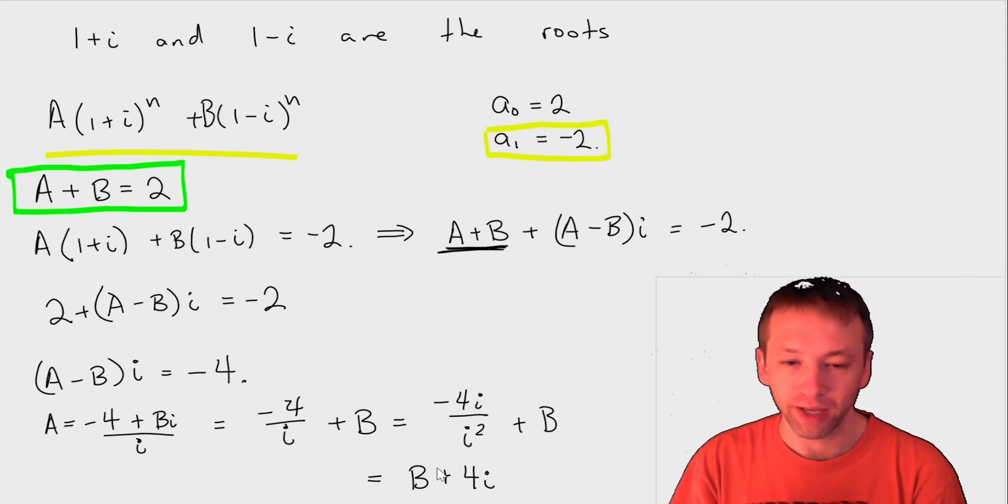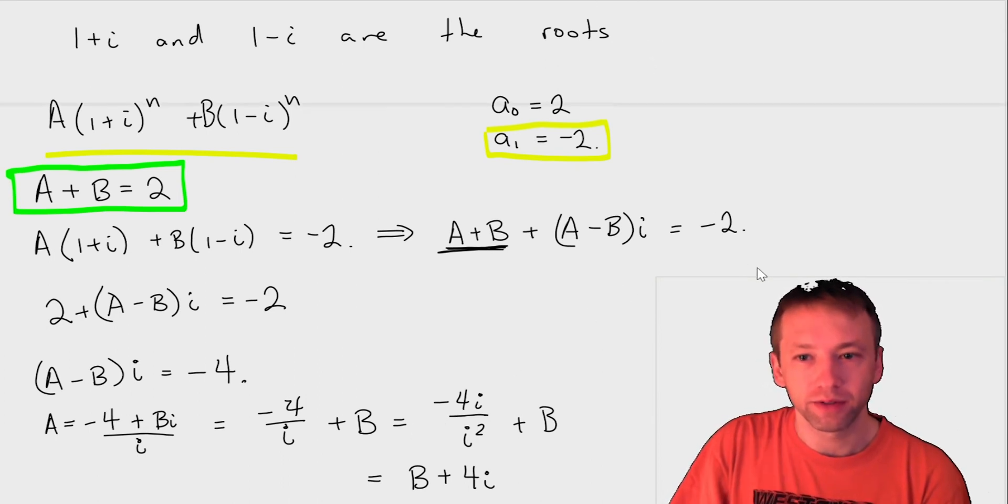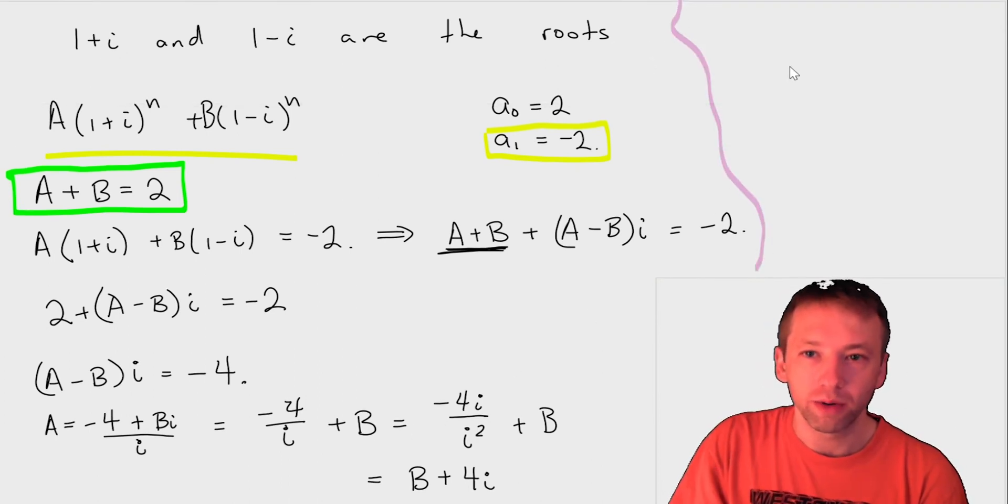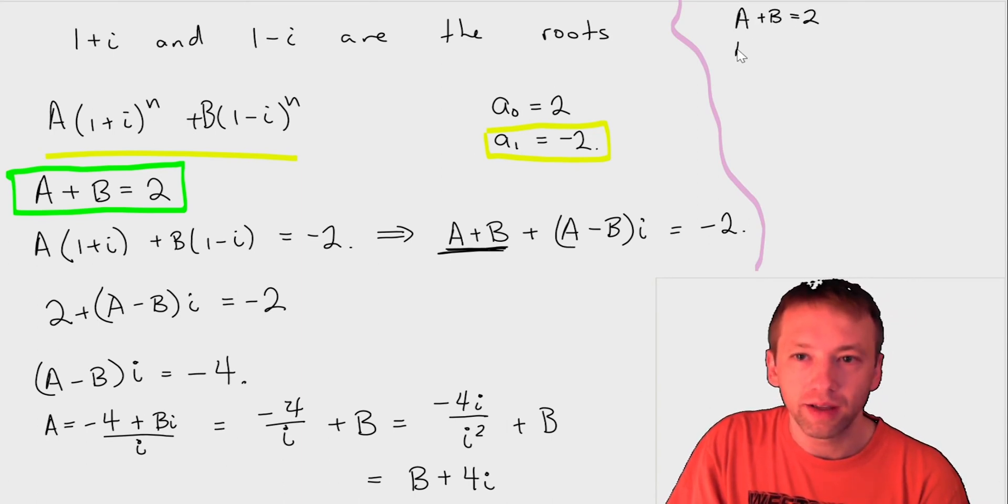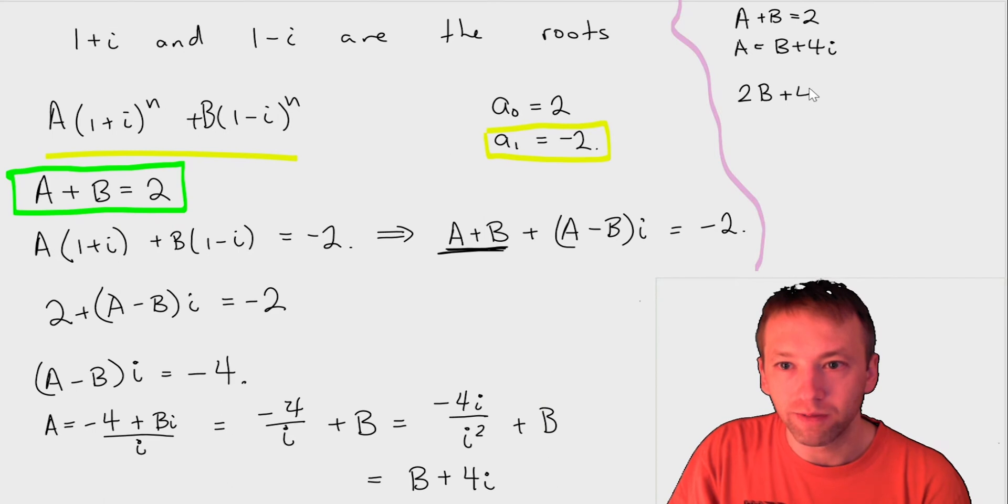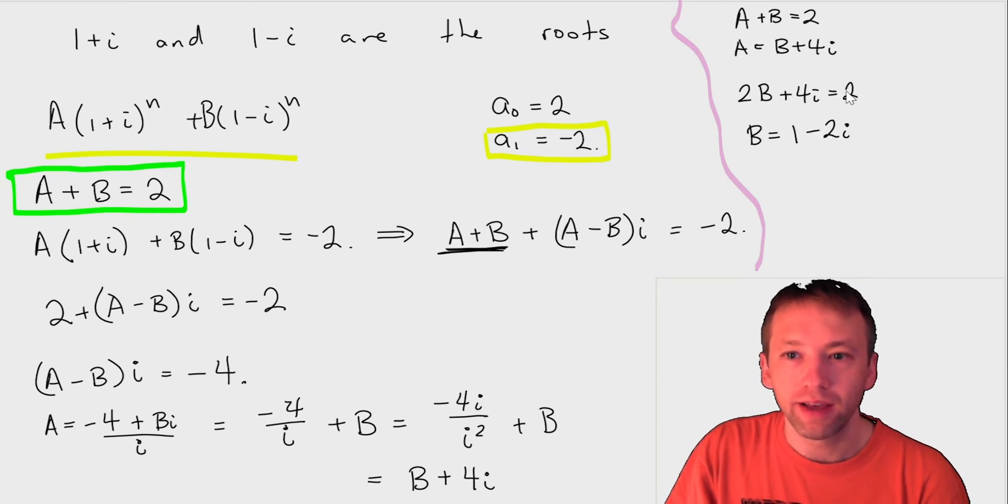I'm just taking this i squared, I'm putting in -1. It cancels the negatives and I get 4i. But that tells me actually that A and B are going to be complex numbers, actually. So now the equations we have, so I'll start writing over here in this corner, we have that A + B is 2 and A is B + 4i. So I put that into the first one and we have 2B + 4i is 2. Solve it for B, so B is 1 - 2i. And if you solve for A in the other equation, you get that A is now 1 + 2i.